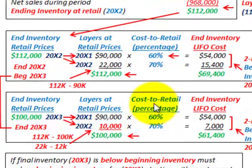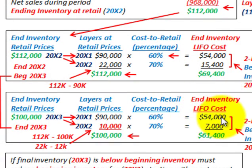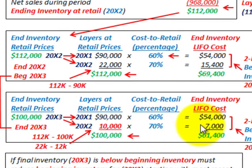We go through the same calculations again. The cost-to-retail percentage for the 20x1 layer is 60%, giving $54,000 — same as before. For the 20x2 layer, now reduced to $10,000, we use 70%: 70% times $10,000 gives us $7,000.